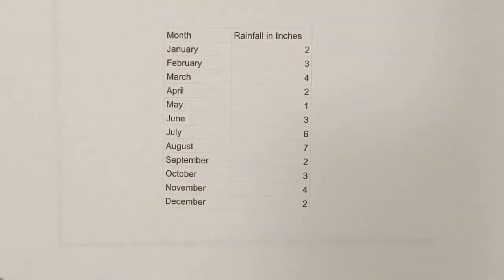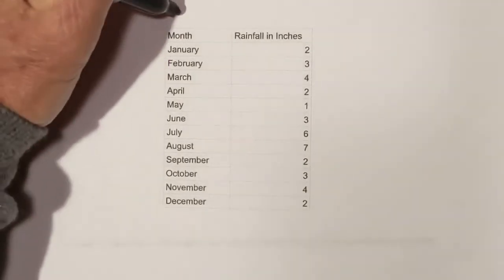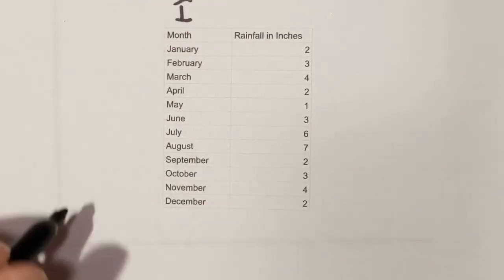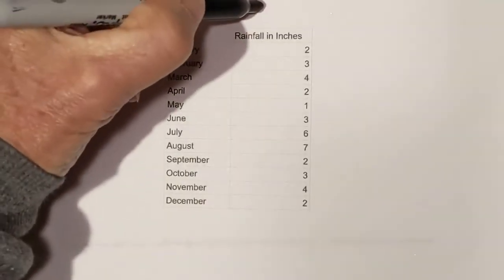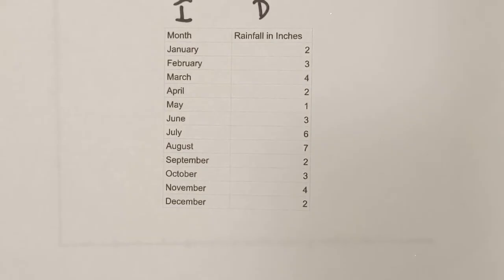Let's first identify the dependent and independent variables. The time, the months, will be your independent variable because time depends on nothing. And then the amount of rainfall is the dependent variable.